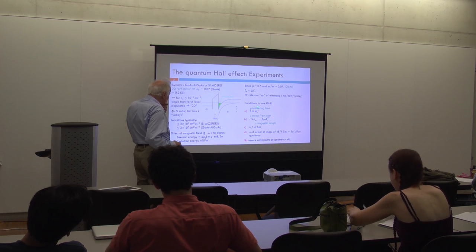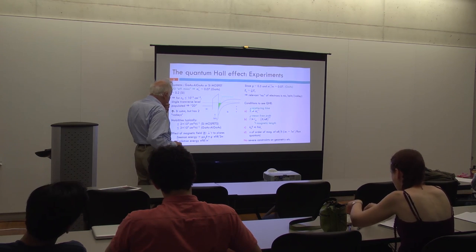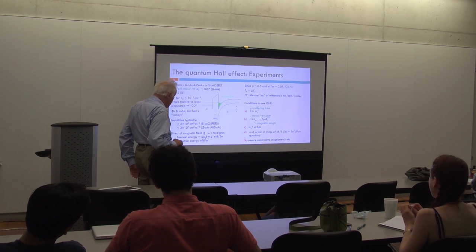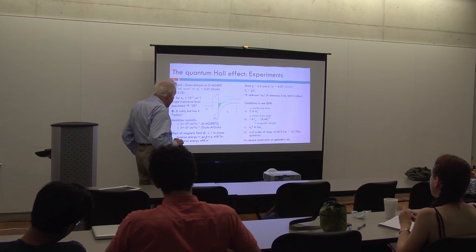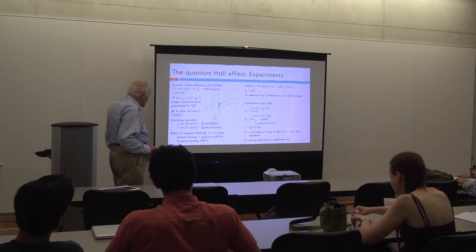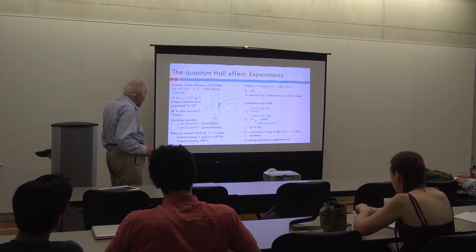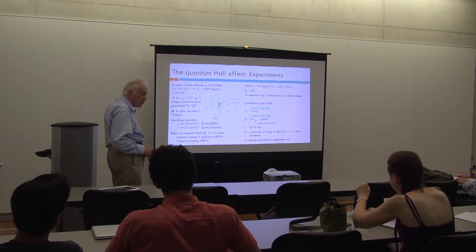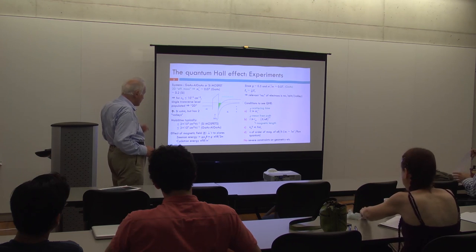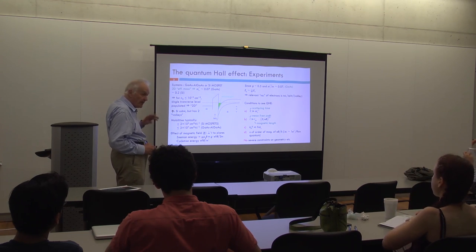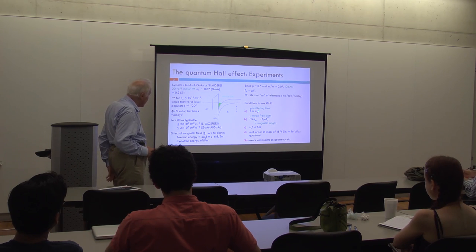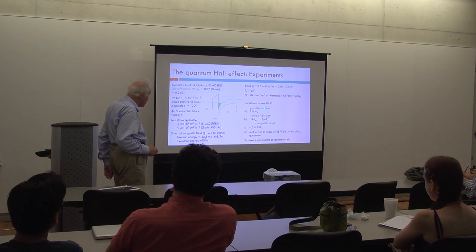Conditions to see the quantum Hall effect — why wasn't it seen clearly before 1980? The conditions are quite severe. The scattering time has to be long compared to the inverse cyclotron frequency; semi-classically, an electron has to be able to complete several orbits in the magnetic field before it suffers any collision.